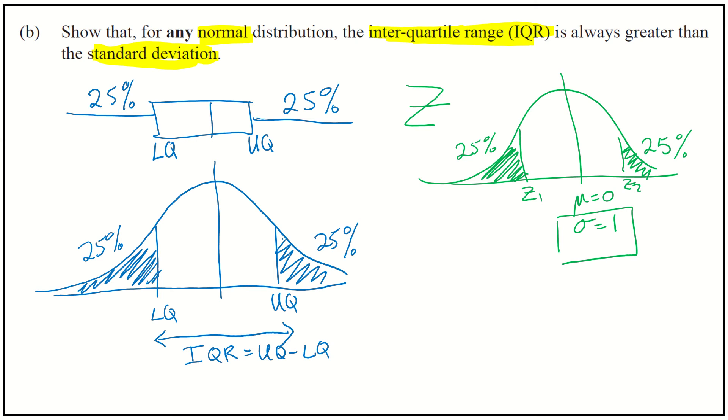So that's what I want to do, is I want to find those values for Z1 and Z2, where they are equivalent to the upper and lower quartile values. So let's go and get our calculator.